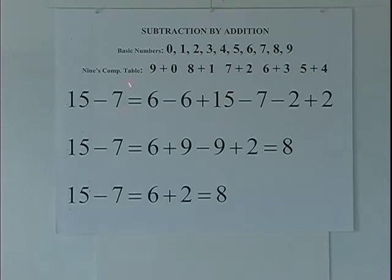The first subtraction I will do by subtraction. I will add the numbers in the minuend, 1 plus 5, that's a 6, and write 6 minus 6 plus 15. 6 minus 6 is a 0, and when I add that to 15, I get 15.